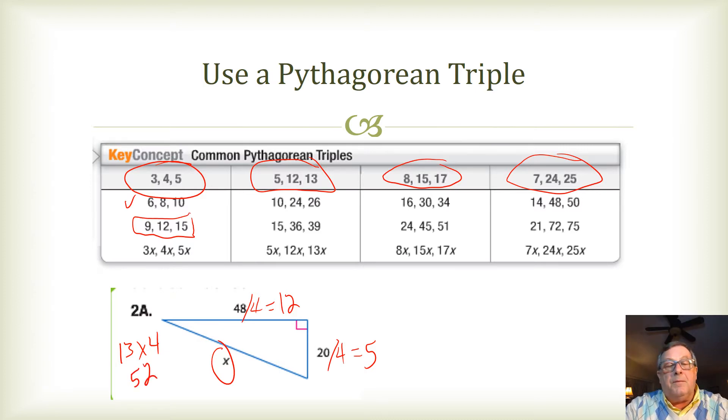And so, that's an example of using a Pythagorean triple to find the measure of a missing side. And, again, for me, I'd probably just soon use Pythagorean theorem to solve it. But this lets you deal with a little bit smaller numbers if they happen to fit one of these common Pythagorean triples.